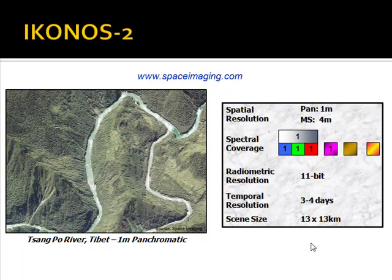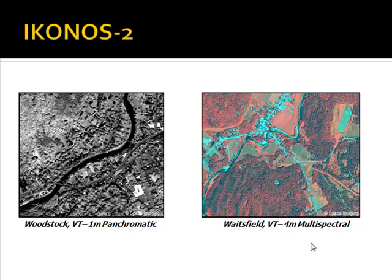IKONOS-2 was the first high-resolution commercial satellite to be launched by a company in the United States. It has a high-resolution 1-meter panchromatic band (black and white) and a 4-meter multi-spectral capability sensing blue, green, red, and near-infrared. Unlike aerial systems, it has a radiometric resolution of 11 bits, can revisit a single point on the Earth's surface every 3 to 4 days, and acquires imagery in approximately a 13 by 13 kilometer area. Panchromatic and multi-spectral examples are shown here.